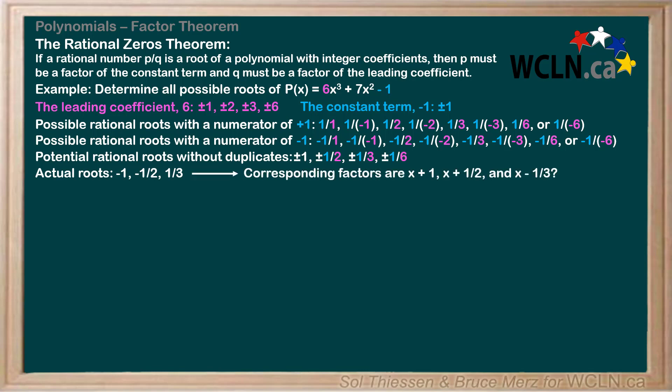Presumably, the corresponding factors are x plus 1, x plus 1 half, and x minus 1 third, right? Let's try to write p of x, which is 6x cubed plus 7x squared minus 1, as the product of these three factors. Do you see an issue? If we expand these factors by multiplication, there will be a coefficient of only 1 on the x cubed term, where p of x has a coefficient of 6. So clearly, the product of the three factors is not equal to the polynomial p of x.